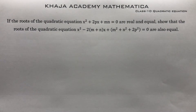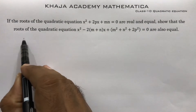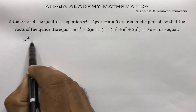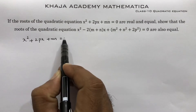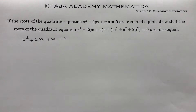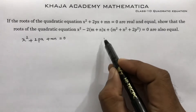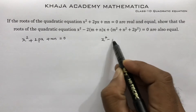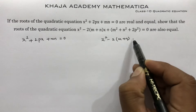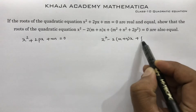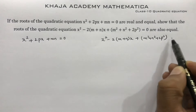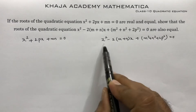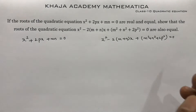If the roots of the equation x² + 2px + mn = 0 are real and equal, show that the roots of the equation x² - 2(m+n)x + m² + n² + 2p² = 0 are also equal.